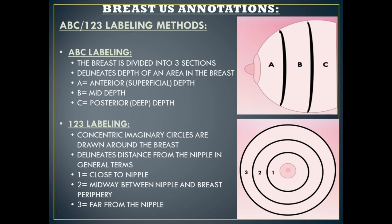For the 1-2-3 labeling method, concentric imaginary circles are drawn around the breast, delineating distance from the nipple in general terms. Today we use centimeters from nipple for a more accurate representation. In the 1-2-3 method, 1 means the mass is close to the nipple, 2 means it's midway between the nipple and the breast periphery, and 3 means it's far from the nipple.